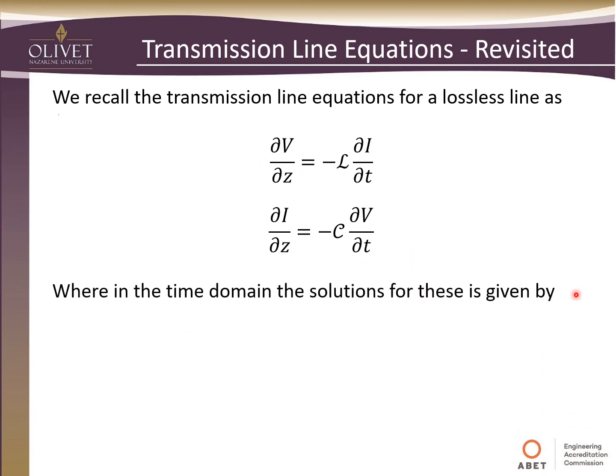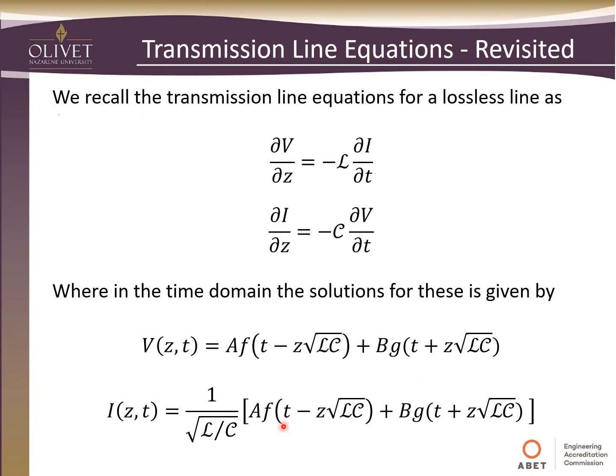The solution to these equations in the time domain, the general solution: voltage as a function of position and time is equal to A times this function f with the argument t minus z times square root of LC, and then B times the second function g, which has another time-shifted argument. Likewise, the current is just one over square root of LC times the voltage solution.